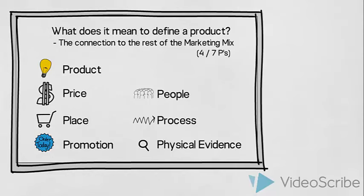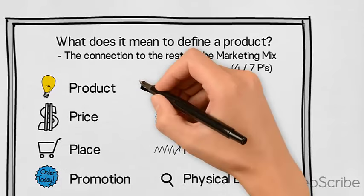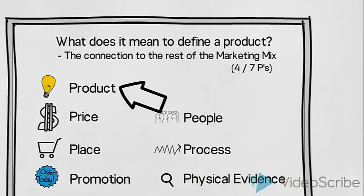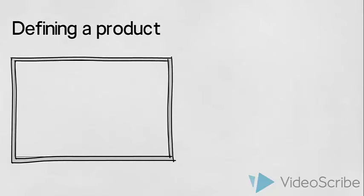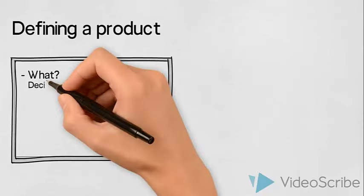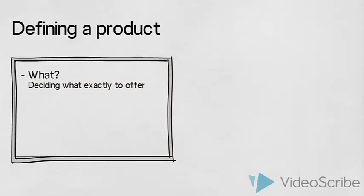None of the four or seven Ps should be decided on in isolation. However, product is the P which we will focus on in this video. So what does it mean to define a product? To define a product means to make some decisions on what exactly to offer the customer.